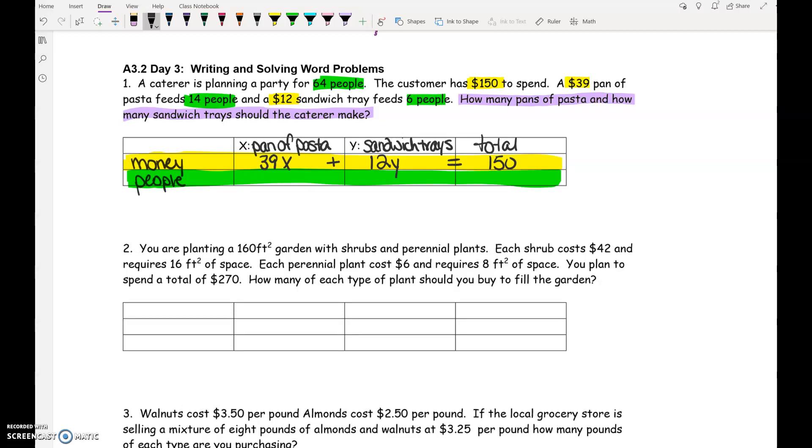Now let's look at the people numbers. People for pans of pasta. What's the number? 14. Now, one pan of pasta feeds 14 people. Two pans of pasta feeds 14 times 2. So you're doing 14 times the number of pans of pasta. You're doing 6 people per sandwich tray times the number of sandwich trays. And that is going to add up to a total of 64 people. So using this table to organize types of numbers and then organize it into your X's and your Y's, it helps you to build those equations if that's something that has been difficult for you in the past.